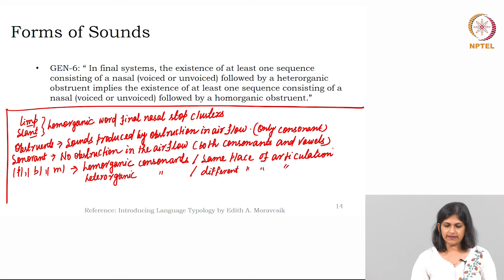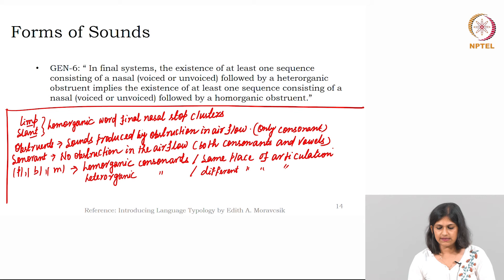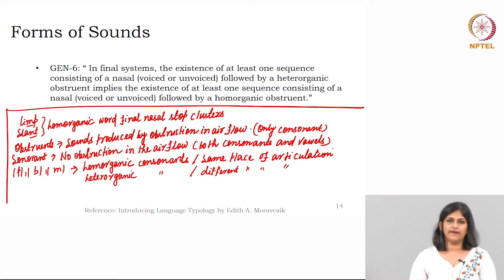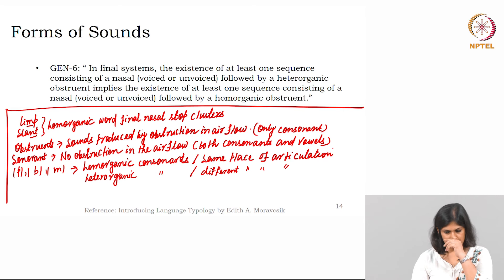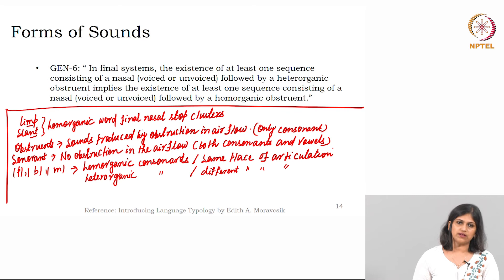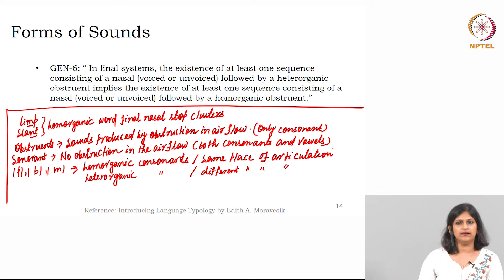The sixth generalization says: in final systems, the existence of at least one sequence of a nasal followed by a heteroorganic obstruent implies the existence of at least one sequence of a nasal followed by a homoorganic obstruent. An obstruent is a sound produced by obstruction in the air flow, and only consonants can be obstruents. The opposite of obstruent is sonorant. Sonorants do not have obstruction in the air flow — they can be either consonants or vowels.